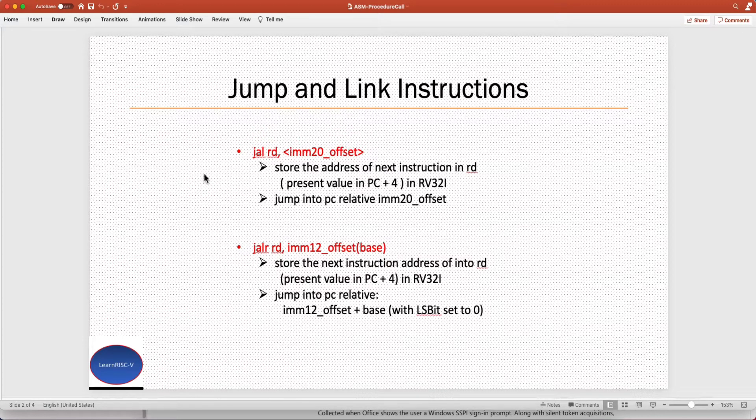There are two variants of jump and link instruction. The first one takes in a destination register and then an immediate 20-bit offset. What this jump and link instruction actually does is it stores the return address, so the present value in the program counter plus four. In RV32I, the instructions are all four bytes wide or 32 bits wide.